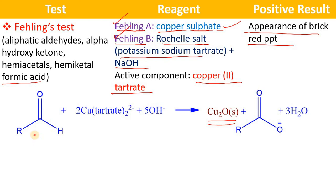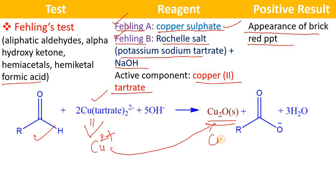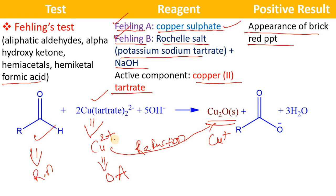When aldehyde is treated with the copper tartrate complex [Cu-tartrate]²⁻, the oxidation state of copper is Cu²⁺ and it is converted to Cu⁺ — this is a reduction, so this complex is the oxidizing agent. Cu²⁺ oxidizes aldehydes into carboxylic acids, but ketones will not be oxidized by Cu²⁺ since it is a weak oxidizing agent. In this process there is formation of cuprous oxide, which is a red precipitate.